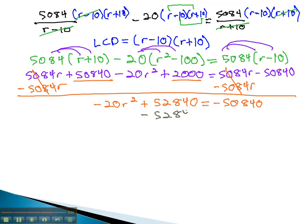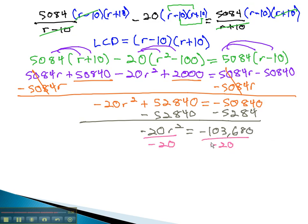Subtracting the 52840 from both sides to start isolating the r squared gives us negative 20r squared equals negative 103680. And dividing both sides by negative 20 tells us that r squared is equal to 5184.